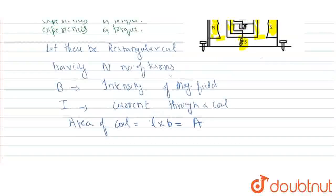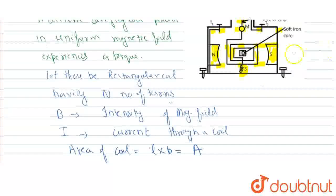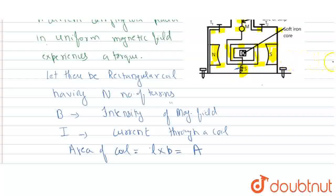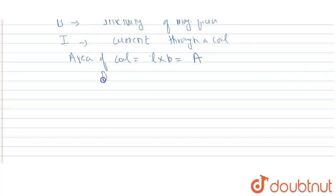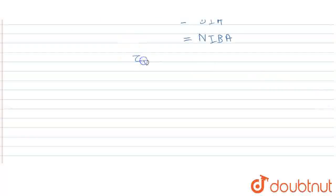When the coil experiences a torque, there is a spring attached which produces a restoring torque. The deflecting torque is equal to N·I·A·B·sinθ. We use a radial magnetic field here, so theta equals 90 degrees and sin 90 equals 1. Therefore, the deflecting torque simplifies to N·I·A·B.